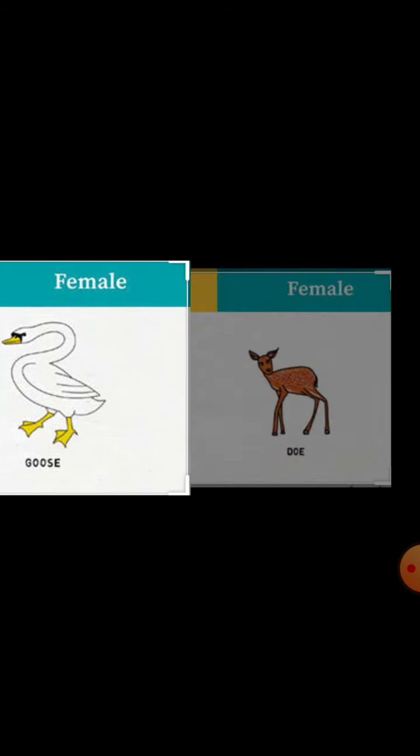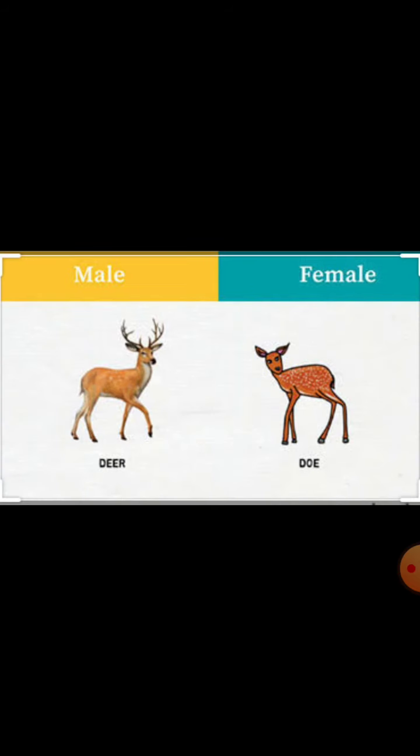Come to the next animal. What is that? Deer. Deer is a masculine name. But doe is a feminine name. Doe is a feminine name.